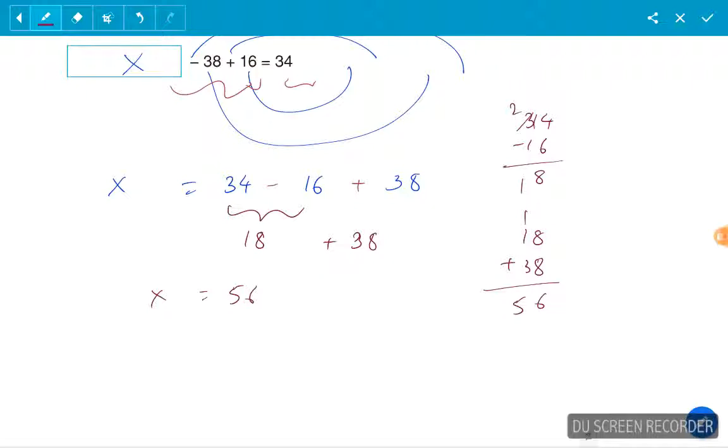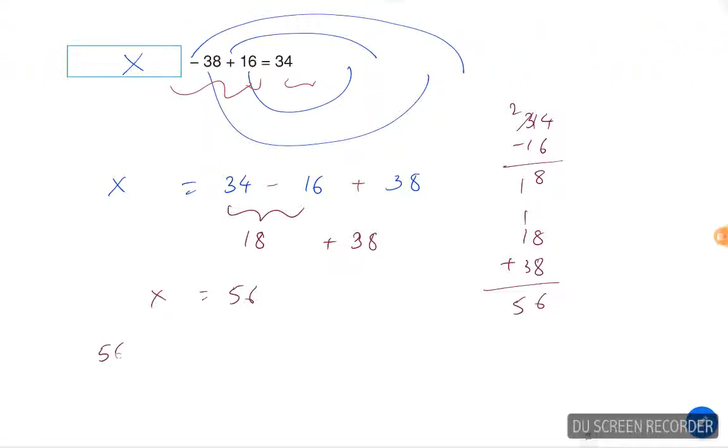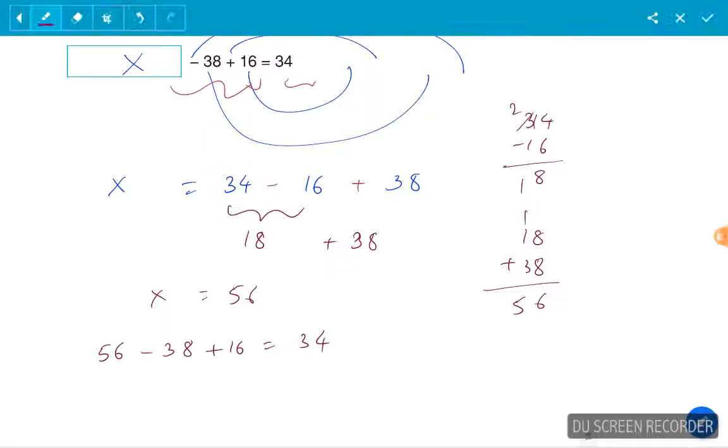So the equation is 56 minus 38 plus 16 should result in 34.